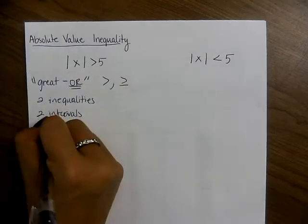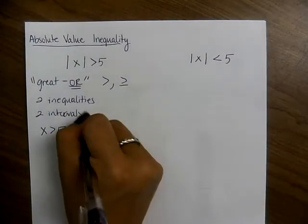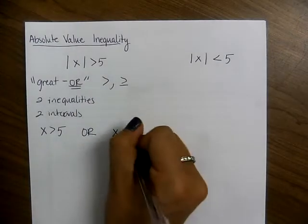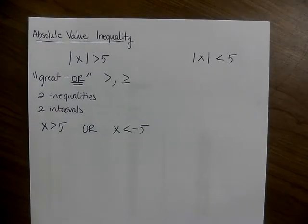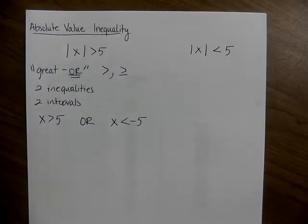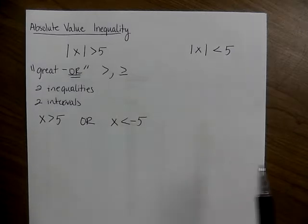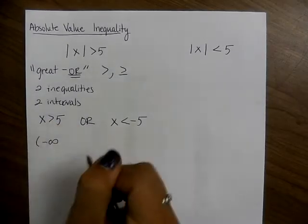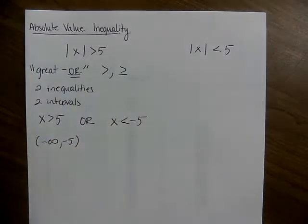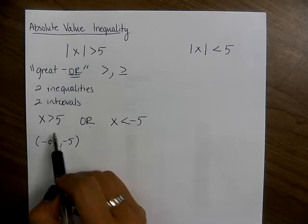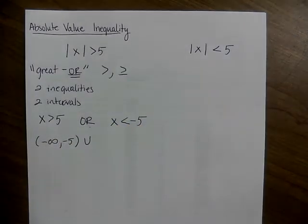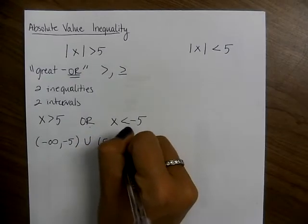For the absolute value of x greater than 5, you'll have either x is greater than 5, or you flip the inequality sign and change the outside to x is less than negative 5. For the interval, x less than negative 5 goes towards negative infinity, so I have (negative infinity, negative 5) union (5, infinity).